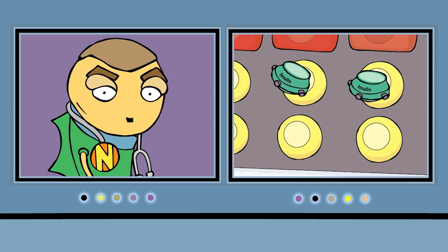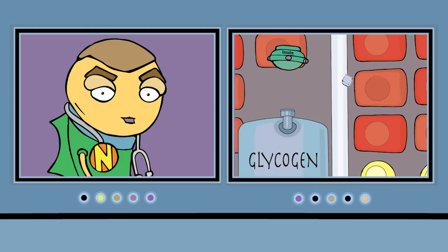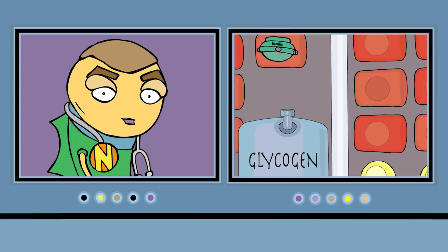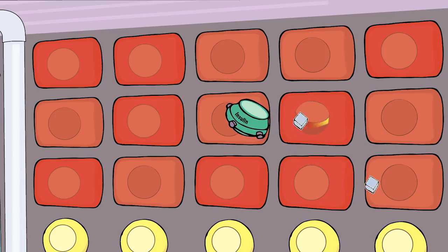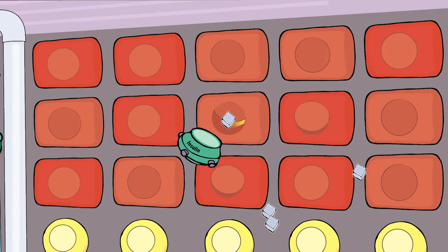That way, the ship continues burning glucose instead of fat. Finally, insulin pushes glucose into storage tanks called glycogen stores. Together, these actions lower the blood sugar after a new delivery of food. By burning away the high blood sugar, Marty prevents damage to the ship.